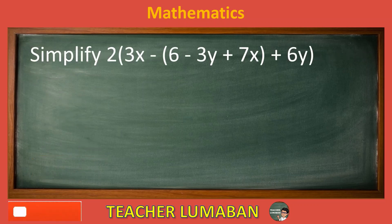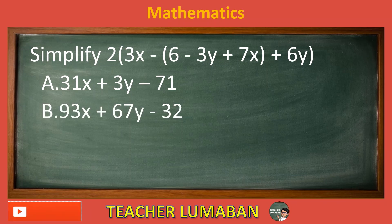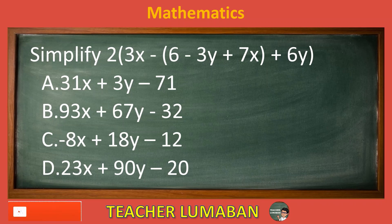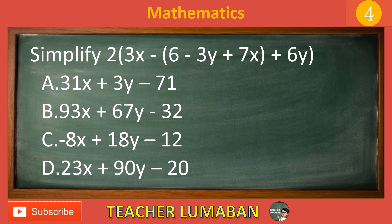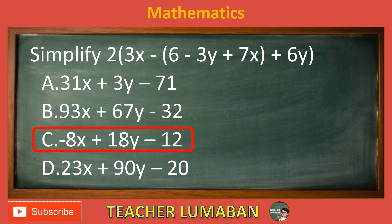Simplify 2(3X minus 6) minus 3Y plus 7X plus 6Y. Letter A: 31X plus 3Y minus 71. Letter B: 93X plus 67Y minus 32. Letter C: negative 8X plus 18Y minus 12. Letter D: 23X plus 90Y minus 20. The correct answer is Letter C: negative 8X plus 18Y minus 12. When simplified, 2(3X minus 6) minus 3Y plus 7X plus 6Y equals negative 8X plus 18Y minus 12.